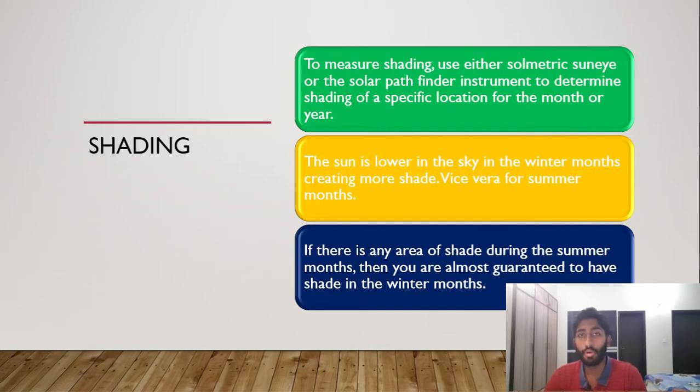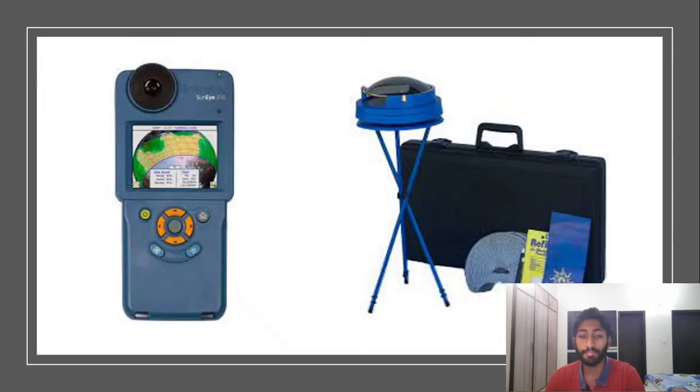When it comes to the sun, it's lower in the sky in the winter months because the day is shorter, compared to the summer months where the day is longer. The sun is going to be higher in the sky. And then if there's any shade that you experience during the summer months, then there's almost guaranteed that you're going to be finding shade in the winter months as well. So just a little background fact or information to keep in mind.